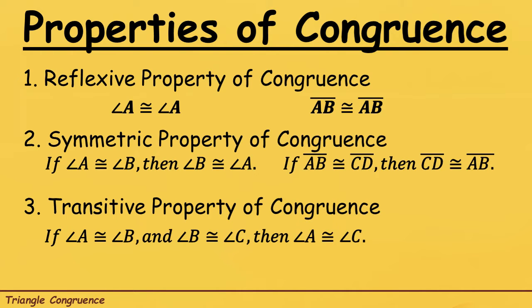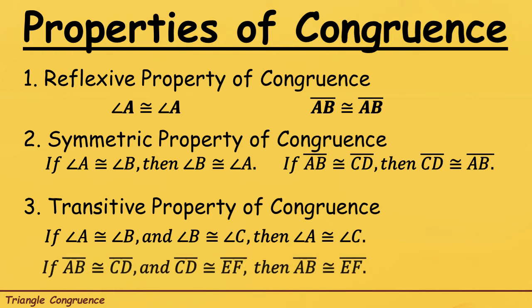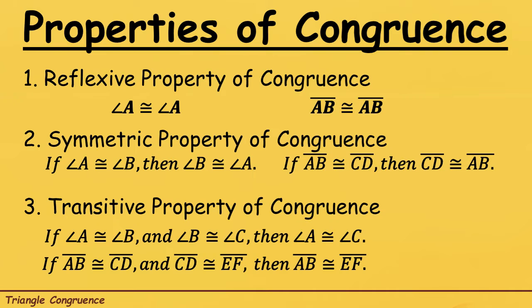Aside from angles, we also have: if line segment AB is congruent to line segment CD, and line segment CD is congruent to line segment EF, then line segment AB is congruent to line segment EF. So we talk about 3 sides here.